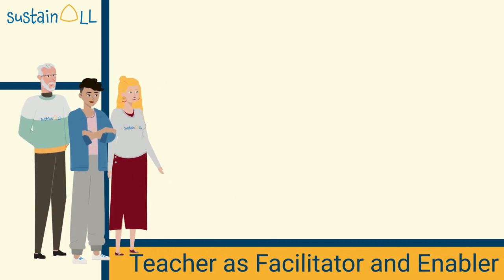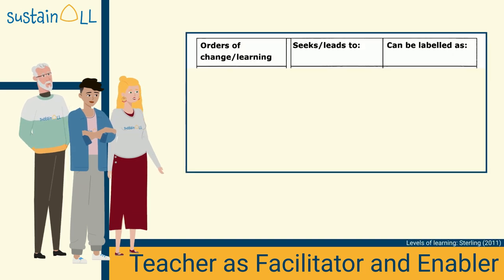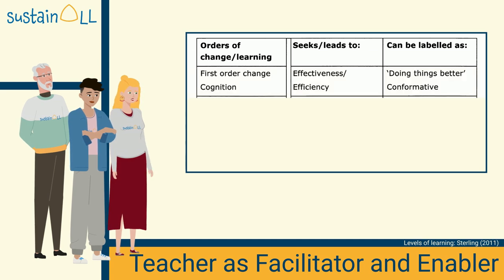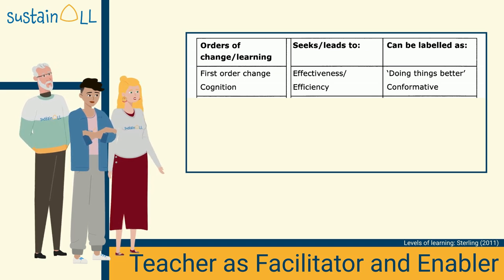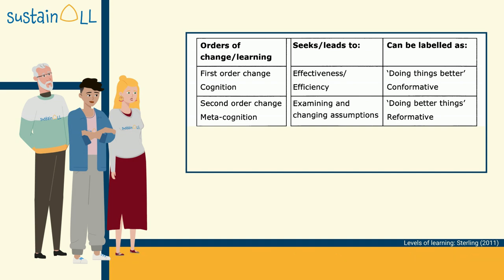First of all, we need to ask ourselves the question: what should be facilitated? Stephen Sterling from the University of Plymouth introduces the idea of three levels of knowing and learning. Learning can involve and affect different levels of consciousness. First order of change addresses cognition — it might be an effective way of doing things better, without examining or changing the assumptions or values behind it. Second order change wants students doing better things — it refers to a significant change in thinking or in what you are doing, as a result of examining assumptions and values. This requires metacognition.